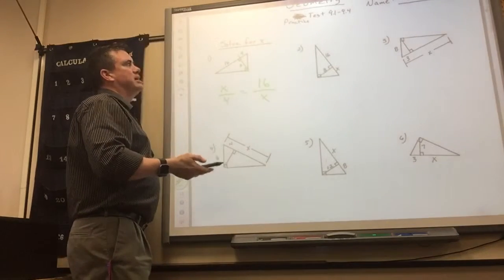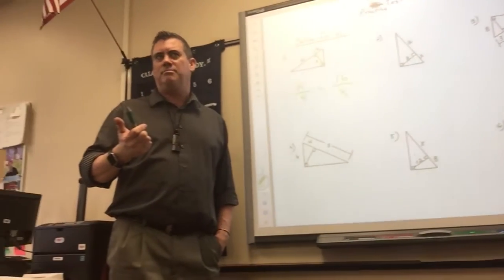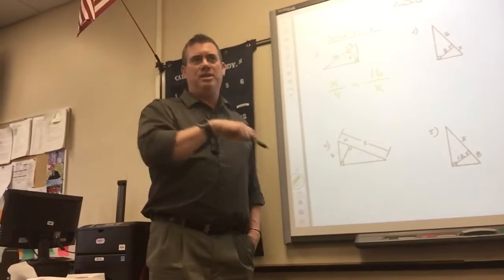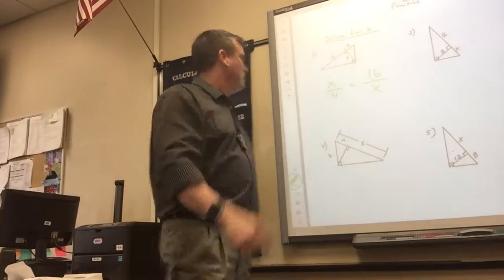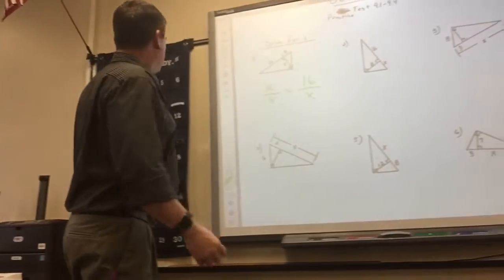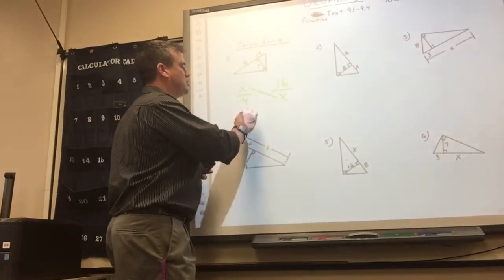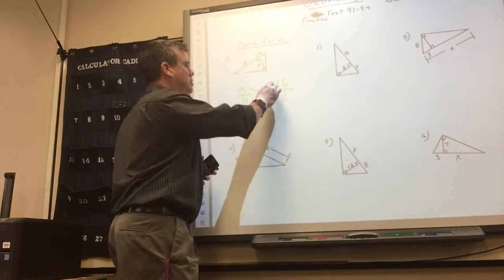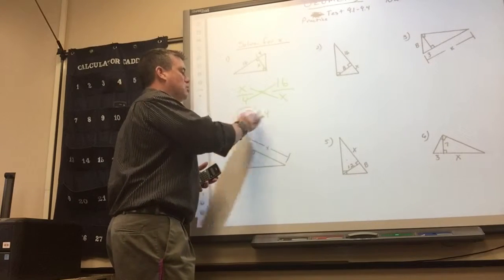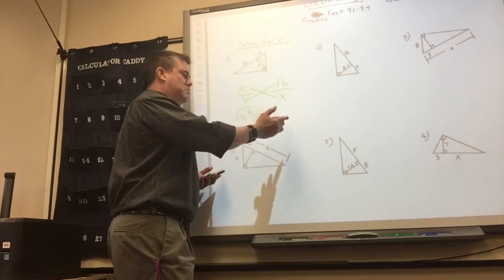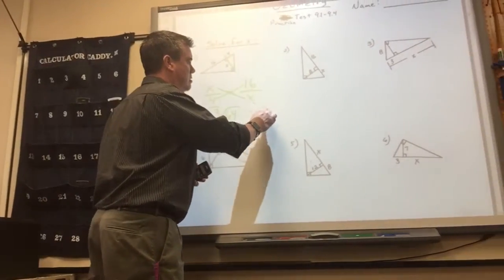Now if you notice, it doesn't say to leave in radical form, so you can just round to the nearest tenth. When you solve this one, x times x is x squared, equals 16 times 4, which is 64. When you square root it, it's a perfect square — x equals 8.